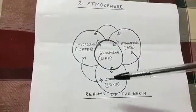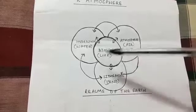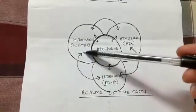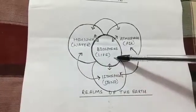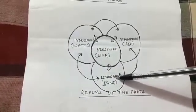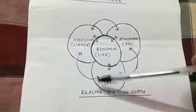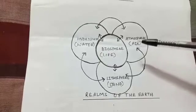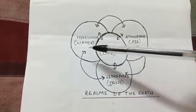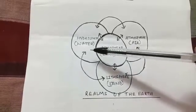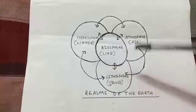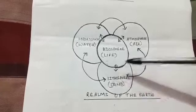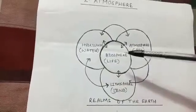The earth has four realms as you can see in this diagram: lithosphere, atmosphere, hydrosphere, and biosphere. Lithosphere means the solid portion of the earth, that means the land. Atmosphere means the blanket of air that surrounds the earth. Hydrosphere comprises all the water bodies on the earth and biosphere comprises the living world. All the life forms are present in this part of the earth.